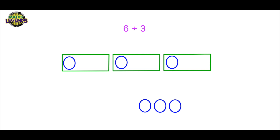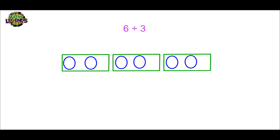We still have three left, so we need to do that again. We put one again in the first one, another one in the second, and one in the last one. Now we have two in each of the three rectangles. So this means that our answer is two, because when we have six items and we want to divide it between three things, we get two in each rectangle.